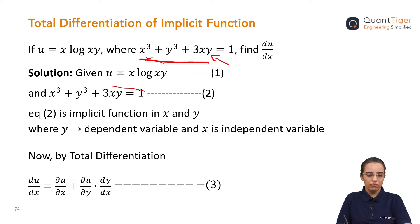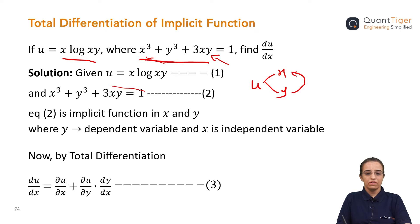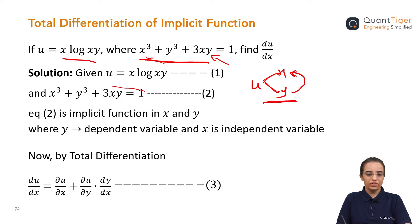If we draw the diagram, u is a function of x and y — as seen clearly from u = x·log(xy). Since it is an implicit function, y is dependent on x, meaning y is also a function of x. So from u, you can go directly to x, or you can go from u to y and then from y to x, because y is a function of x.